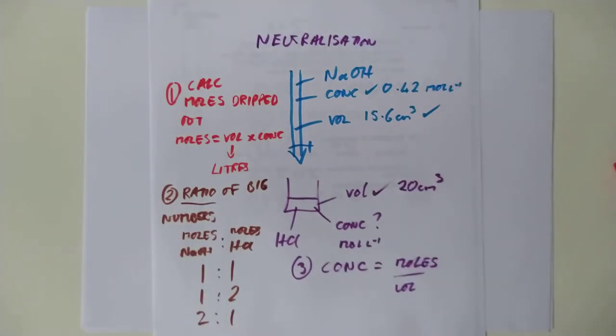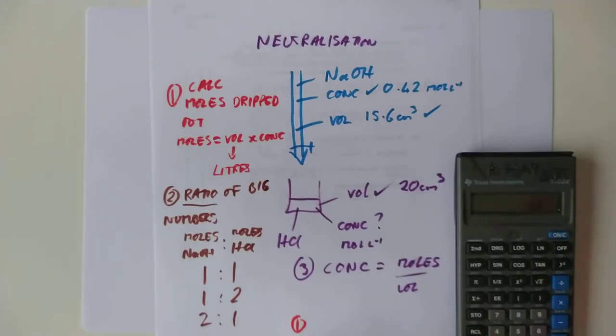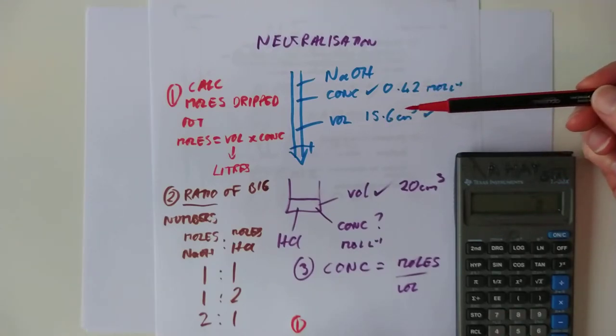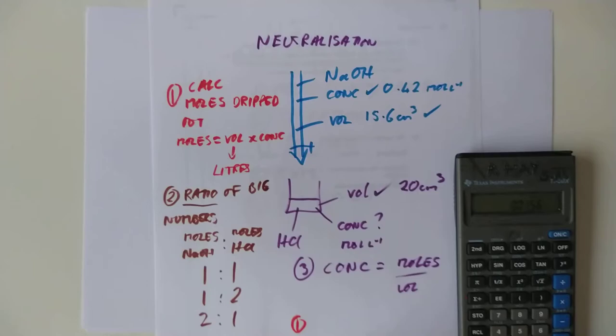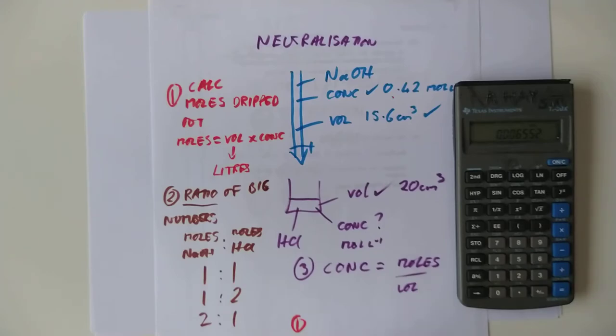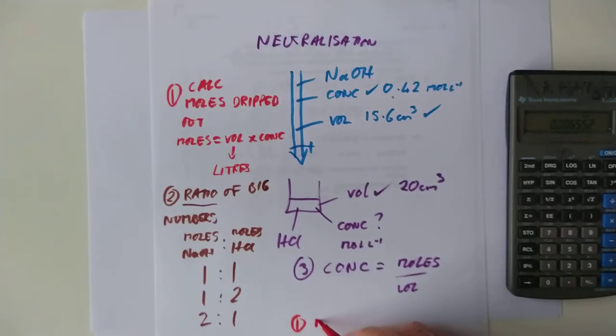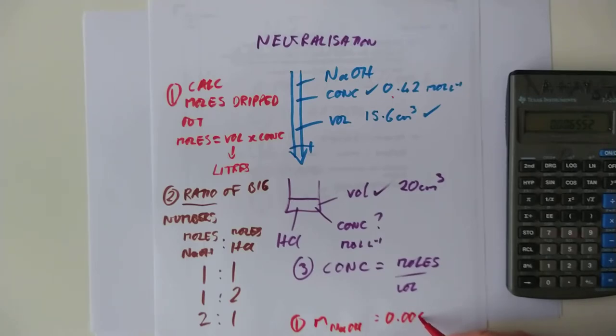Because in the bottom beaker, what we want to know for stage three is the concentration. That's the whole point of this experiment. Concentration equals moles divided by the volume in litres. Now, do we know the moles in the bottom beaker? Yes, because stage two told us how many moles of HCl we had. Do we know the volume of the bottom beaker? Yes, we do, because it's mentioned originally in the question. Let's call this 20 centimetres cubed. Let's actually do these three stages for this titration here. So, stage one. Is volume times concentration. So, my volume here was 15.6. Got to divide that by 1000. So, that becomes 0.0156. Volume times concentration. The concentration was 0.42. Times 0.42 gives us moles of sodium hydroxide, which is 0.006552. Let's not do any rounding. Not at this point in time. Because if you round too early, it gives you an inaccurate calculation.